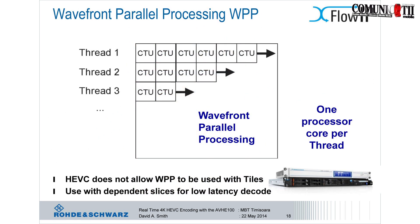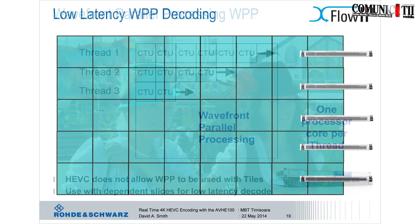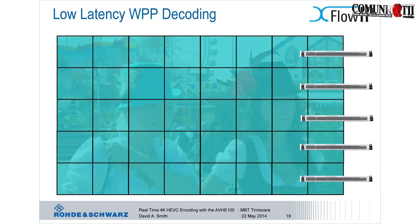You can extend this further with Wavefront Parallel Processing. Loosely speaking, you set one processor — one thread in software, a real physical processor in other cases — and it processes a line of macro blocks across the screen, giving information to the next thread underneath it to allow it to start at the same time. You end up with a very fast decode system, and it depends on how many processors you apply. Very low latency decode times are possible.